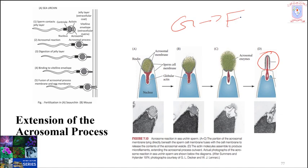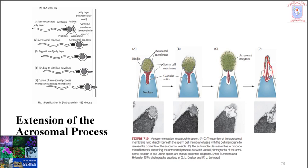The acrosomal process forms when G-actin polymerizes into F-actin filaments. Here you can see some membrane proteins attached to the acrosomal process, represented as green round-shaped structures. These acrosomal membrane proteins help the sperm stay bound to the egg coat as it burrows through, and also help it bind and fuse with the egg plasma membrane once it gets there. Next we will see how actin polymerization is triggered to form the acrosomal process.